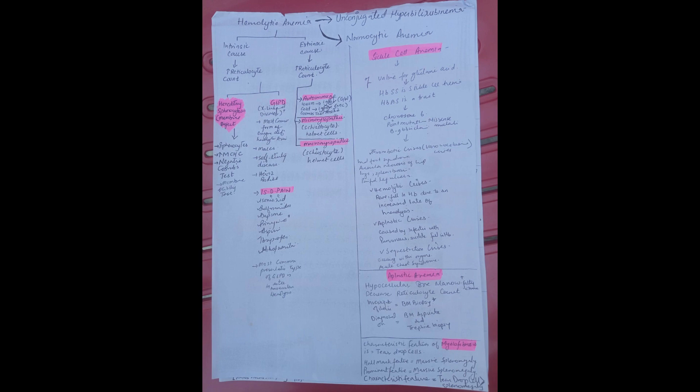Aplastic anemia occurs when the bone marrow is hypocellular and it has fatty changes. There is decreased reticulocyte count.